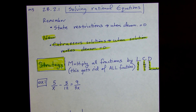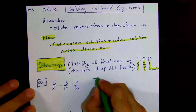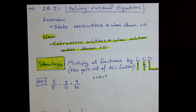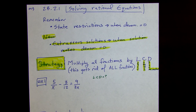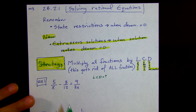Our process is to find the least common denominator first. So how do we find the least common denominator? In this case, we have x, we have 12, we have 3x. What I always look for is what is the greatest number in there. Here the greatest number is 12.